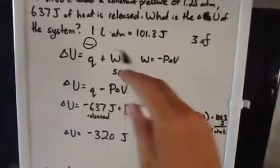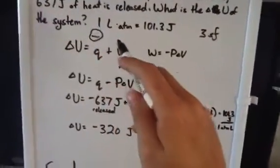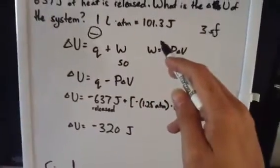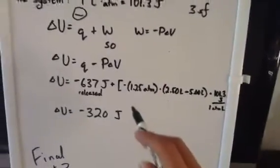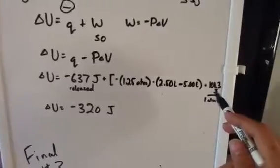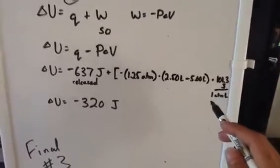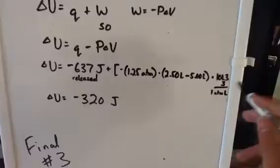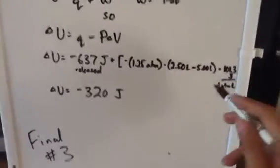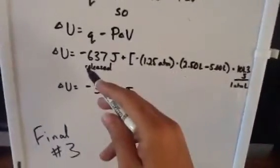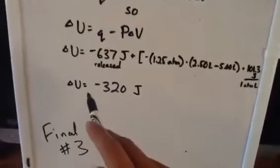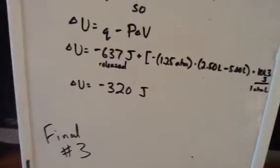We're going to use this conversion factor where we know that for every liter atmosphere, we have 101.3 joules. So we're going to multiply this by 101.3 joules. Our answer here will be in joules. We'll add that to negative 637 and we'll get negative 320 joules.